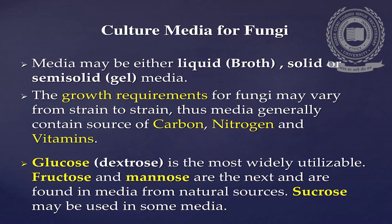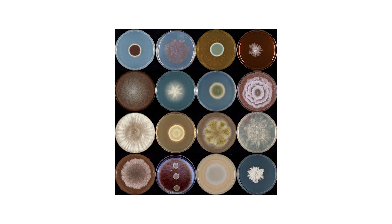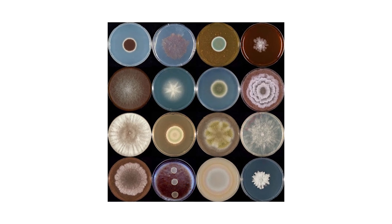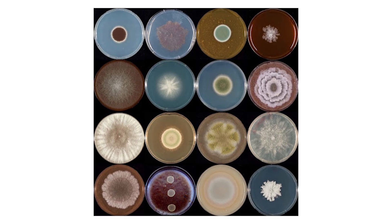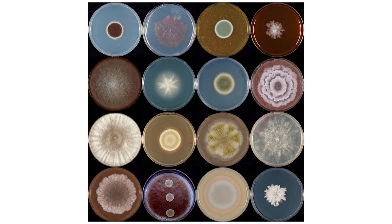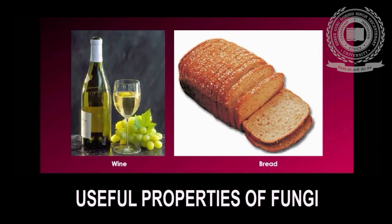Most fungi found in nature can grow readily on simple sources of nitrogen and carbohydrates. The medically significant fungi are mesophilic and have an optimal growth range considerably below body temperature. The optimum temperature in vitro for the majority of fungi is between 25°C and 37°C. Fungi prefer acidic pH, and therefore most fungal culture media have a pH range towards the acidic side.